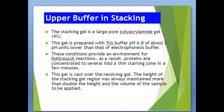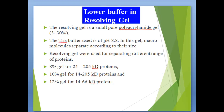The stacking gel is cast over the resolving gel. The height of the stacking gel region is always maintained more than double the height and volume of the sample to be applied. The resolving gel is a small-pore polyacrylamide gel. The Tris buffer used is at pH 8.8. In this gel, macromolecules separate according to their size, and resolving gels are used for separating different ranges of proteins.